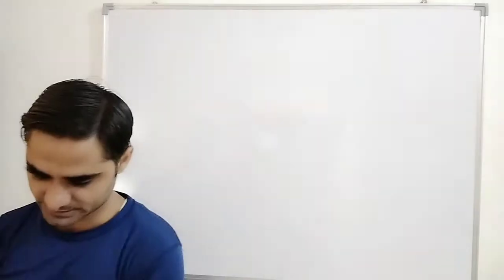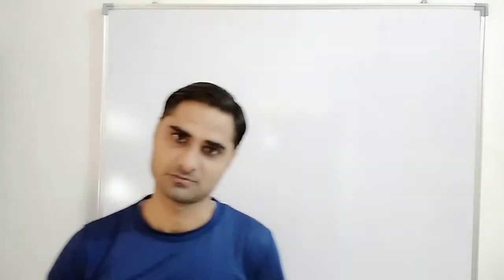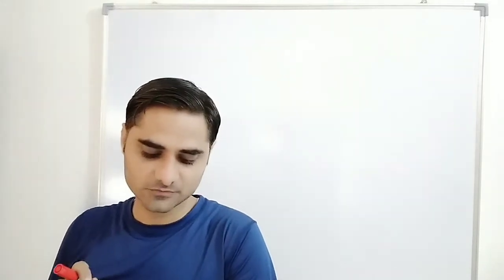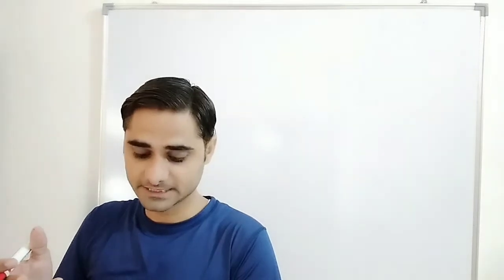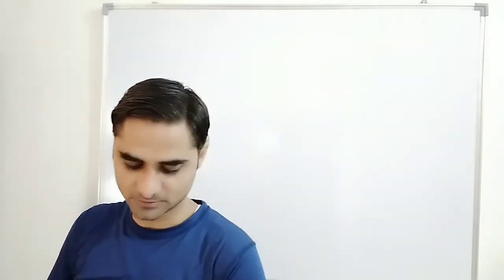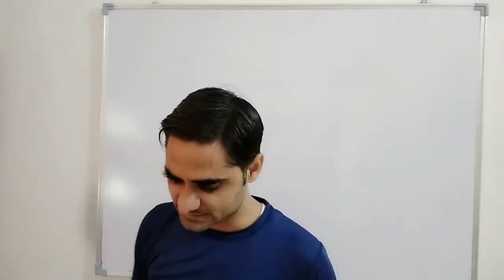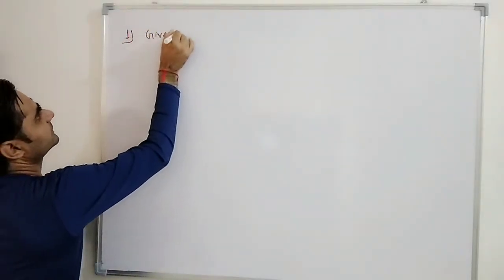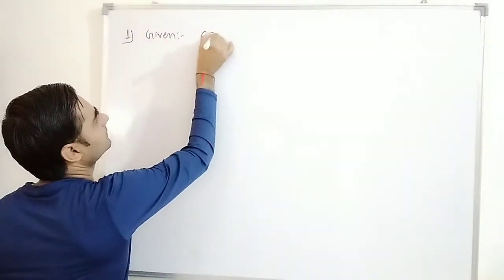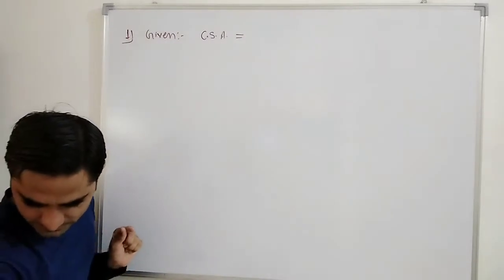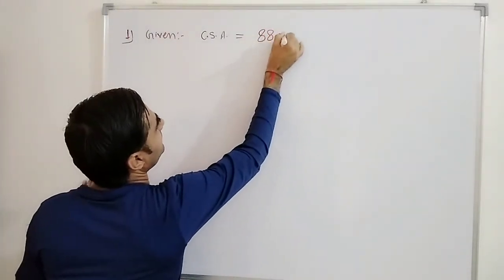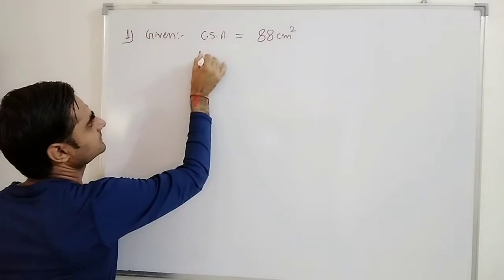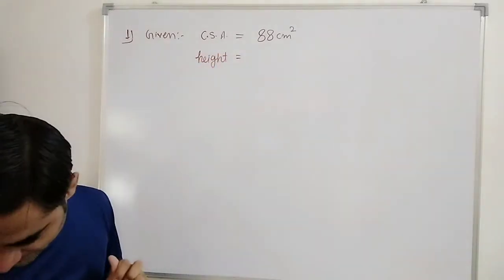Question number one — please try to solve from your side so that you can also understand. The curved surface area of a right circular cylinder of height 14 cm is 88 cm². Find the diameter of the base. Two things are given: one is height and one is curved surface area. First, write what is given: curved surface area = 88 cm², height = 14 cm.